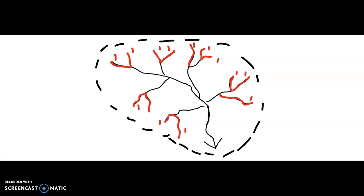It is very important that you establish a proper stream ordering system first before you determine an accurate bifurcation ratio. The second-order streams would be associated with two first-order streams, or perhaps multiple first-order streams, merging together. In doing so, they will actually create a second-order stream. The lines which are in green represent the second order, because they were created by two or more first-order streams merging at a particular juncture.